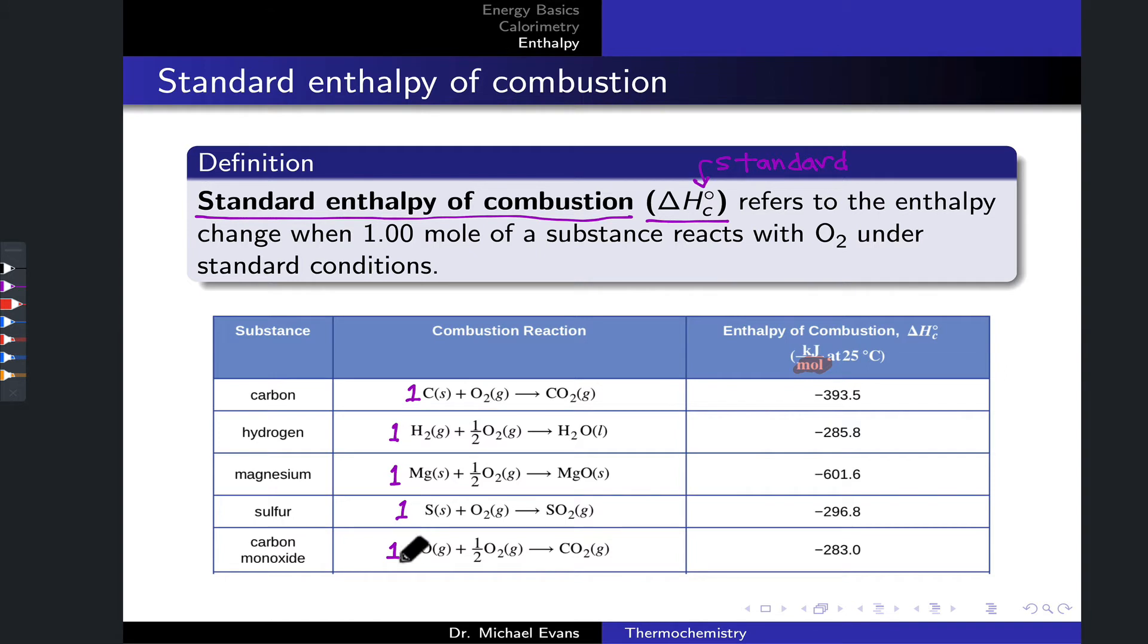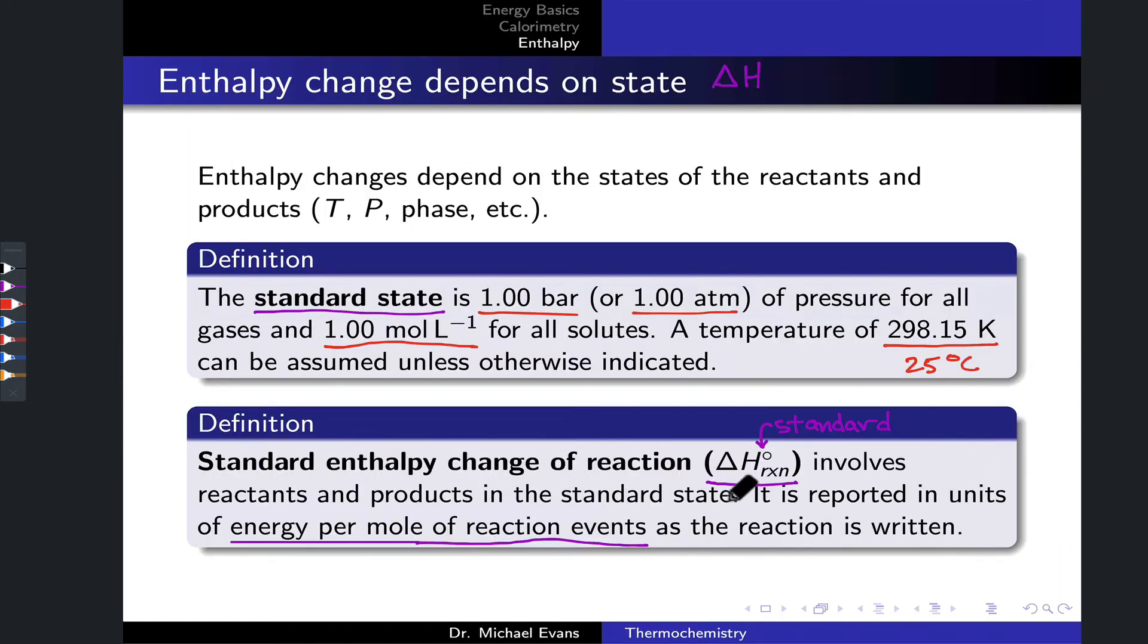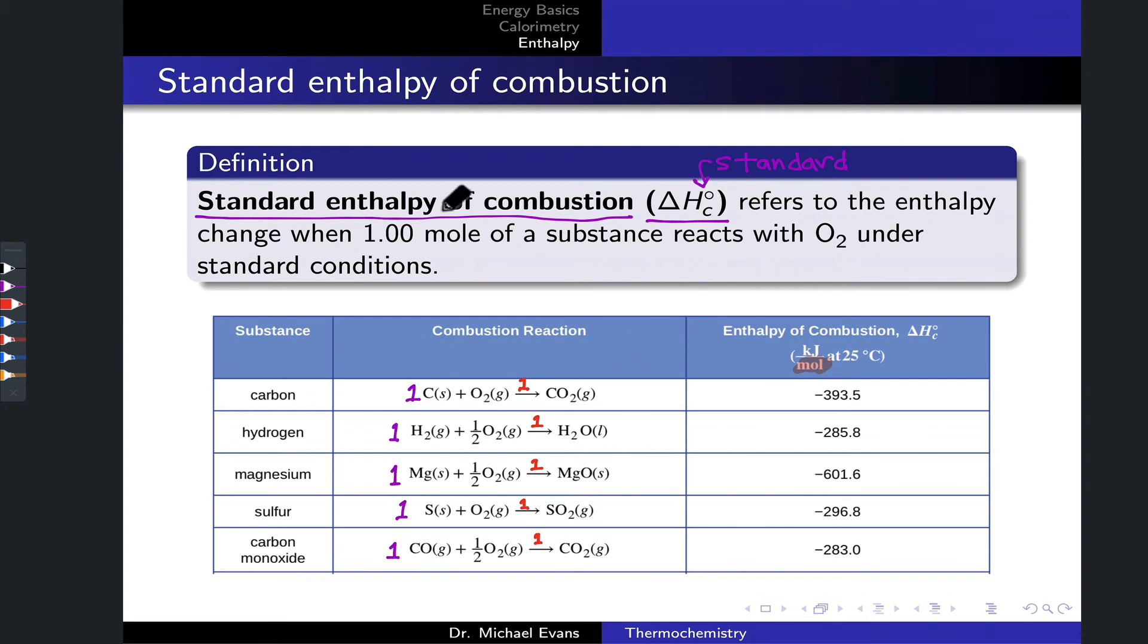Note that this per mole refers to per mole of reaction events. Because we're dealing with one mole of the substance of interest by definition, this is the same as saying per mole of carbon, hydrogen, magnesium, etc. But in general, this per mole refers to a mole of reaction events, which you can think of as one occurrence of the reaction, like a hidden one above the reaction arrow. That's enthalpy of combustion—it works exactly like standard enthalpy change of reaction, just a specific instance involving reaction with oxygen.